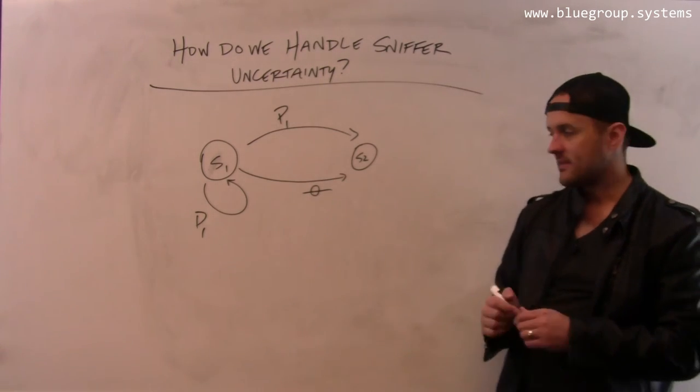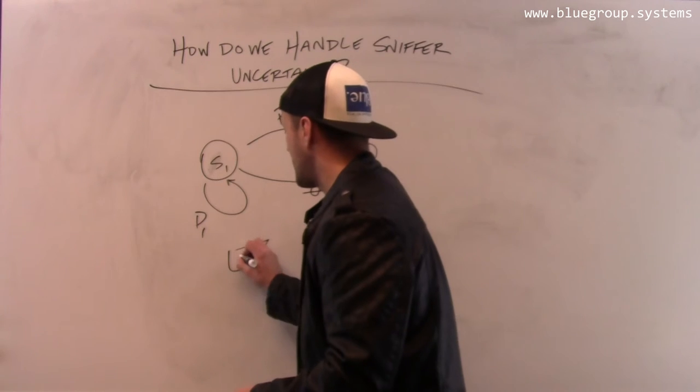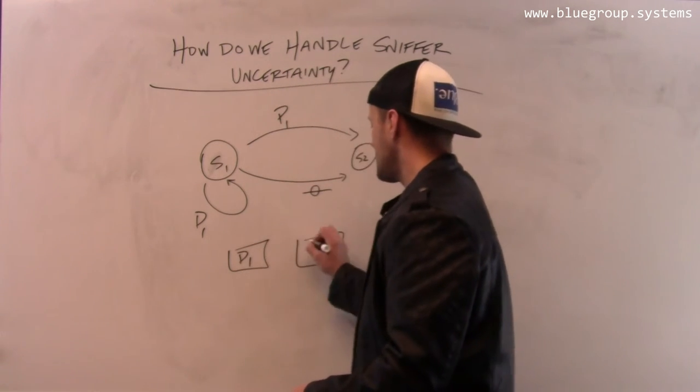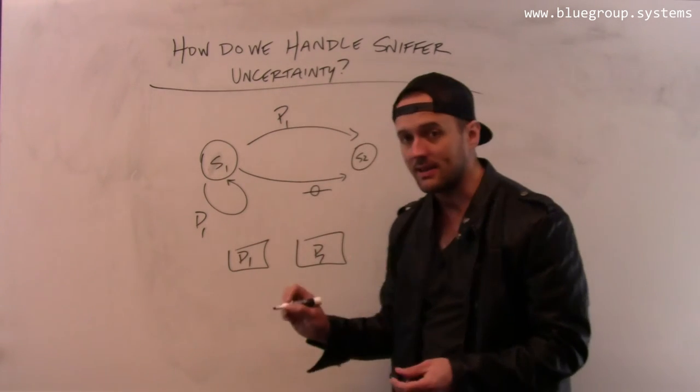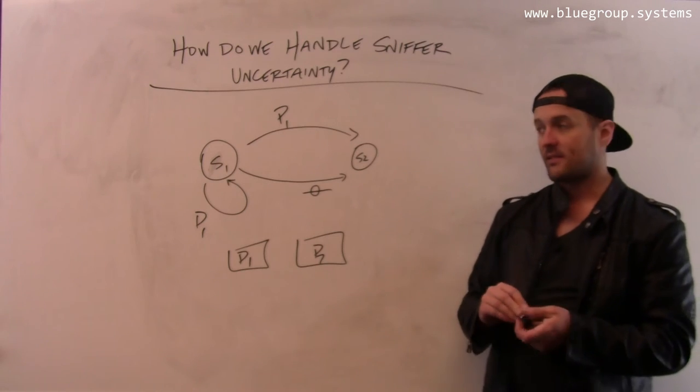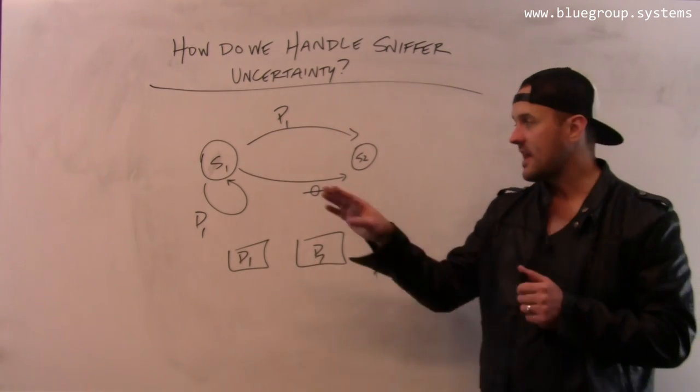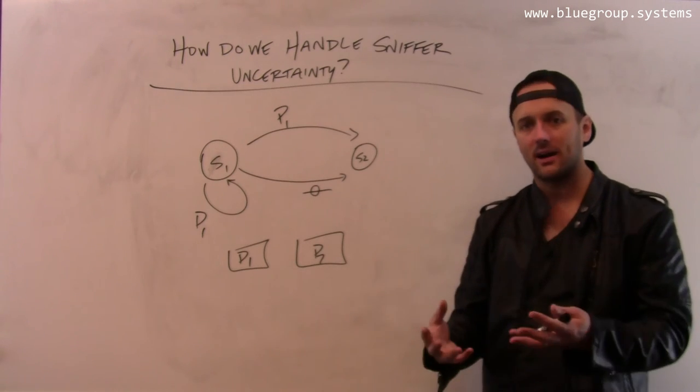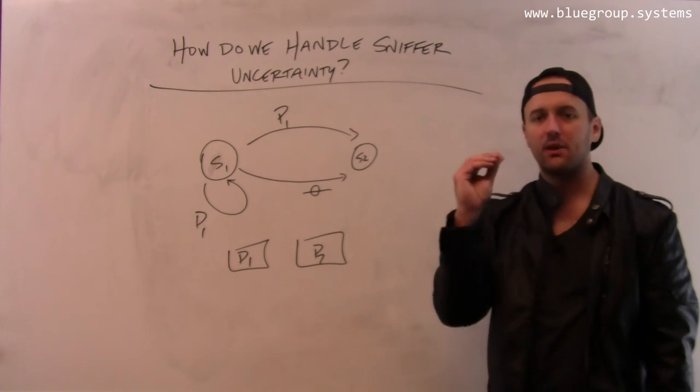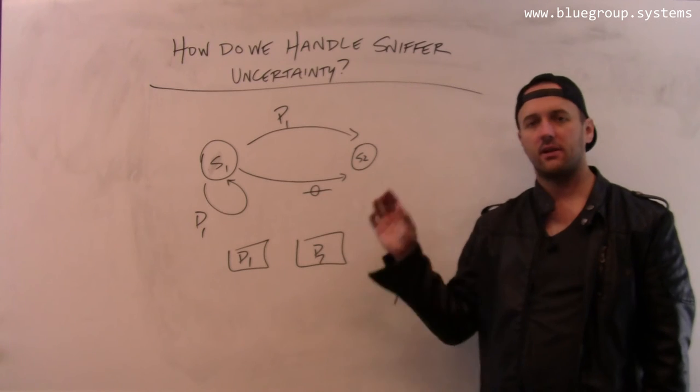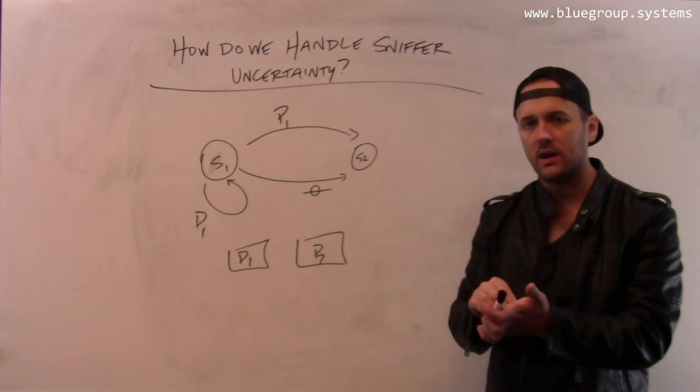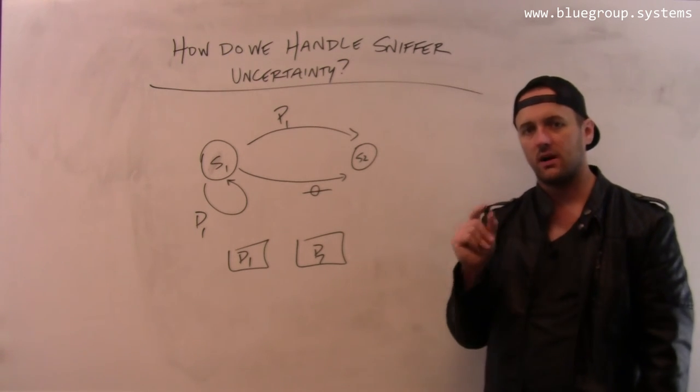And so what's outputted from this is given a particular sniffer trace, what is the probability that this trace would be accepted by the augmented state machine? Now, there are still cases where the state machine can actually get stuck and can completely reject the trace. So there are certain cases where the trace is wrong and I can show that there's a violation with 100% probability.